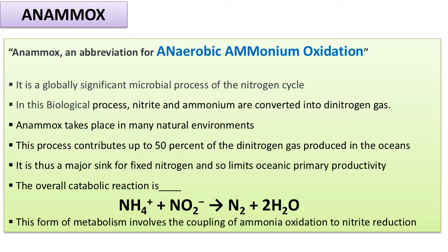This form of metabolism involves the coupling of ammonia oxidation to nitrite reduction — a coupled redox reaction where ammonia is getting oxidized and nitrites are getting reduced. We will see in the mechanism how this process is coupled and what enzymes are involved.